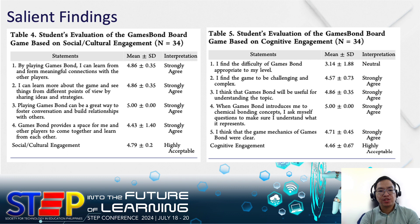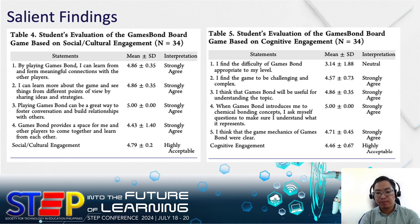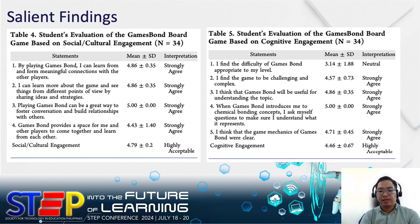Cognitive engagement refers to how learners engage with the game and construct mental models of the concepts. This parameter garnered the lowest rating; however, it still falls under the highly acceptable range. One criterion in particular — 'I find the difficulty of the game appropriate to my level' — garnered a mean score of 3.14 and a standard deviation of 1.88. This may be because some tasks embedded in the game were too challenging for the students. Game designers need to consider how to construct game dynamics that will interest players and help them acquire the desired cognitive outcomes, highlighting the importance of putting students at the center of any game-based learning activities and materials developed.